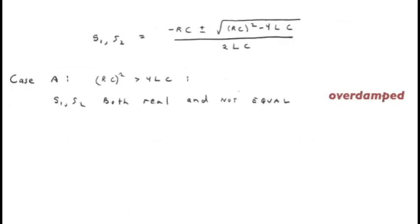We should examine the nature of the possible values of s1 and s2. One possibility is that the quantity in the square root is positive. In that case, both values of s are real, but s1 and s2 are not equal to one another. This is described as an overdamped circuit, and we'll see the reasoning behind that nomenclature just a little later.